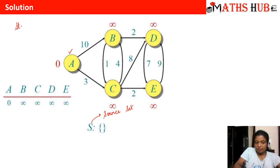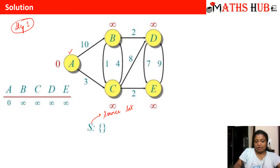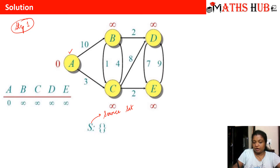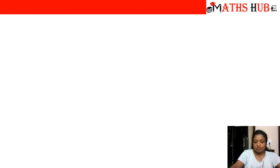From vertex A, if we start calculating distances to other vertices: from vertex A to vertex B, the distance is 10; from vertex A to vertex C, the distance is 3. The first vertex inserted into the source set will be vertex A, because it is identified as the source vertex. So let's move to step number two.